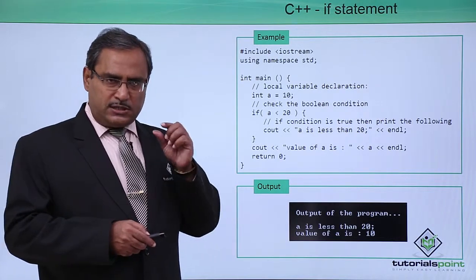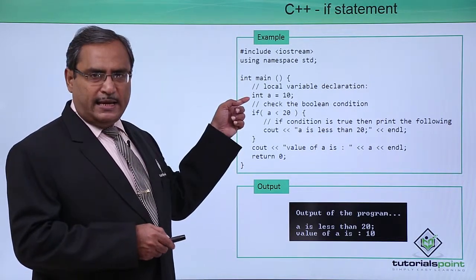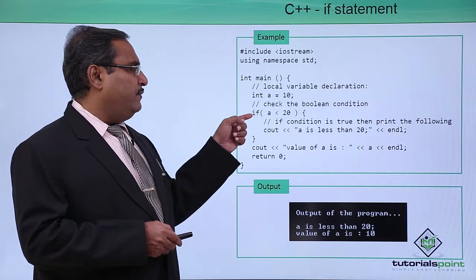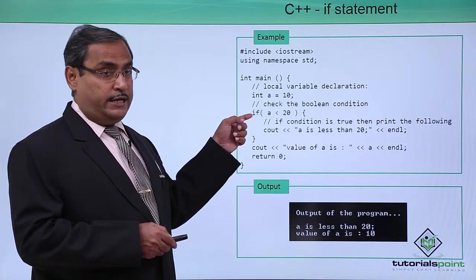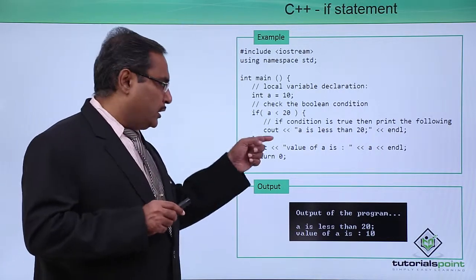Let us go for one C++ coding for understanding. Here we are having int a equals 10. If a is less than 20, 10 is less than 20 is true, so the condition will come.